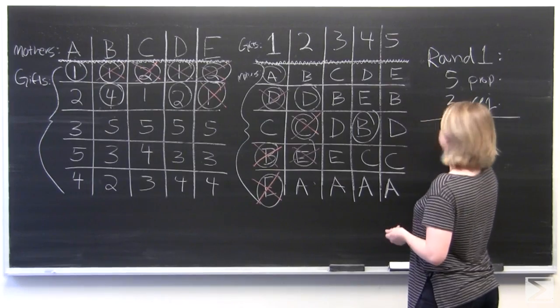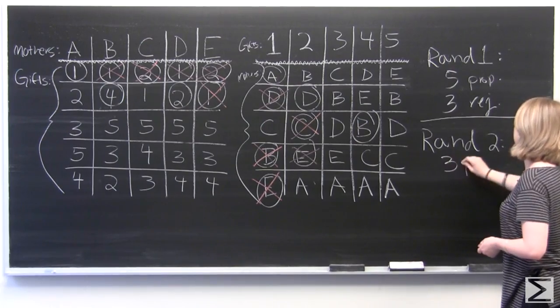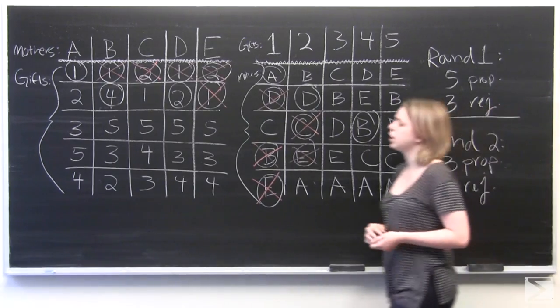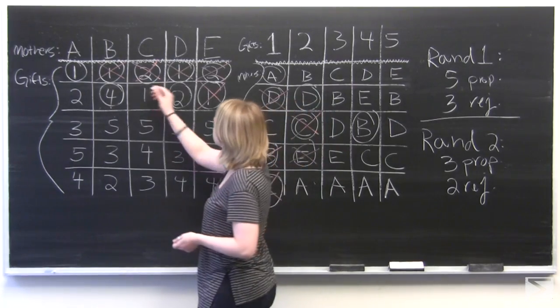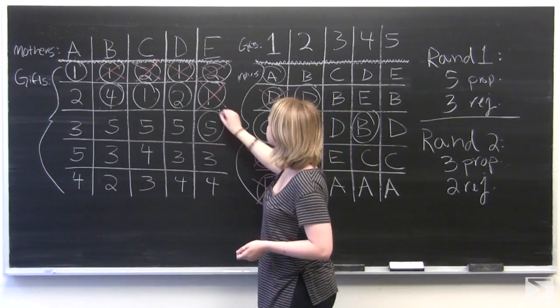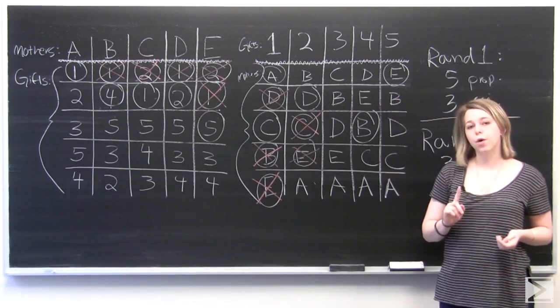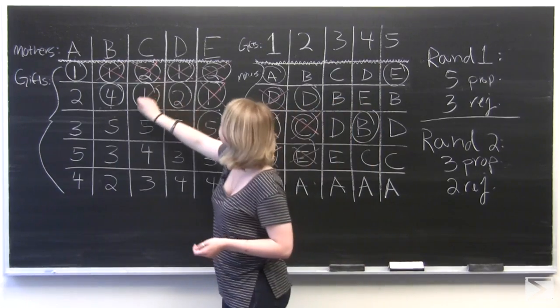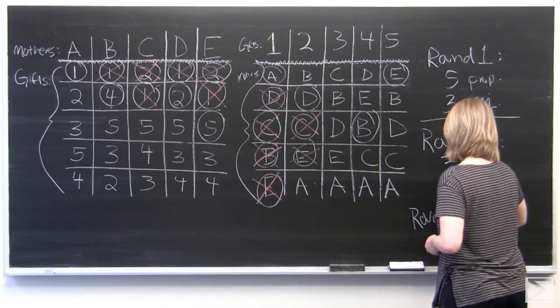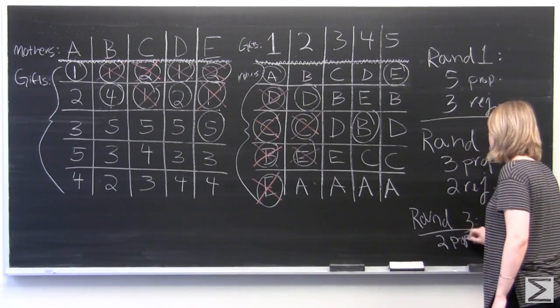So in round number two, we've had three proposals and two rejections. And so we'll move on to round number three. So this time, Mother C is going to ask for gift number one. And Mother E is going to ask for gift number five. And C, we're going to have one more rejection this time for Mother C. And the rest are stable for now. So we had two proposals this round and one rejection.